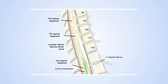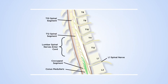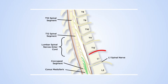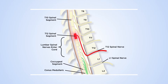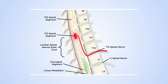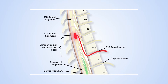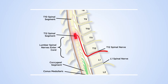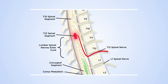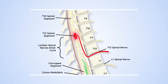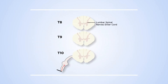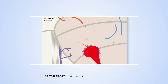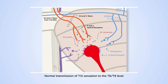The T12 spinal nerve enters the spinal cord at the bottom of the T10 vertebral level. The pain and temperature fibers then enter Lissauer's tract to ascend one to two levels. Thus, the T12 pain fibers enter the dorsal horn at approximately the T8 and T9 level.